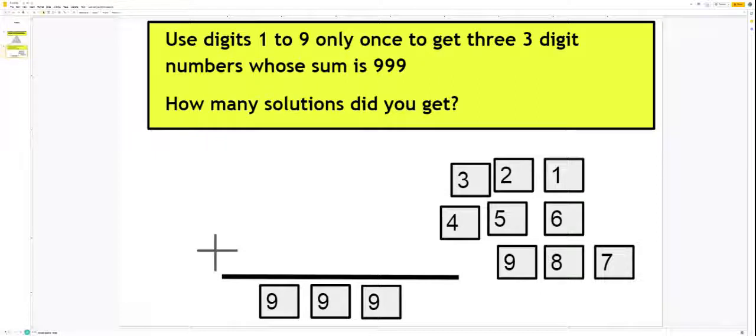We are given nine digits from 1 to 9 and we have to use them once so that we get three 3-digit numbers, and when we add these 3-digit numbers we get the sum as 999.